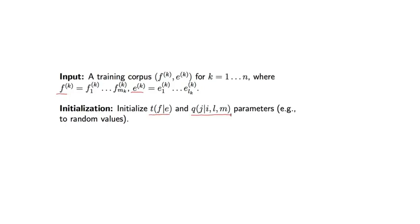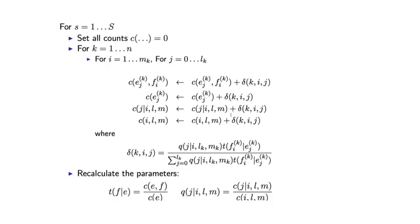You might, for example, choose random initial values for these parameters. Then the algorithm proceeds as follows. So we take S, capital S, iterations over the data. And as I said before, S might be typically 10 to 20 for training these IBM models.